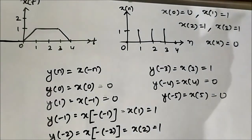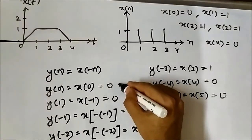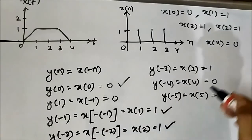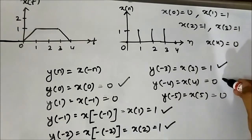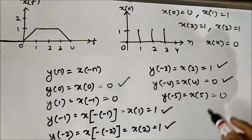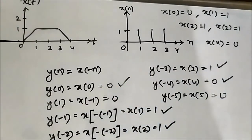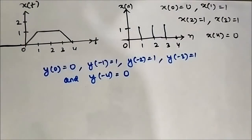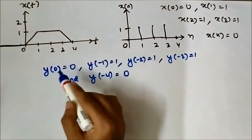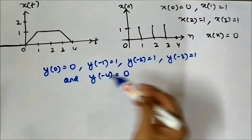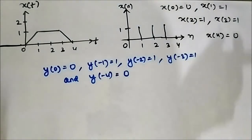The important points for us are y[0], y[1], y[-1], y[-2], y[-3], and y[-4]. Taking these points we have to draw the time-reversed discrete time signal.